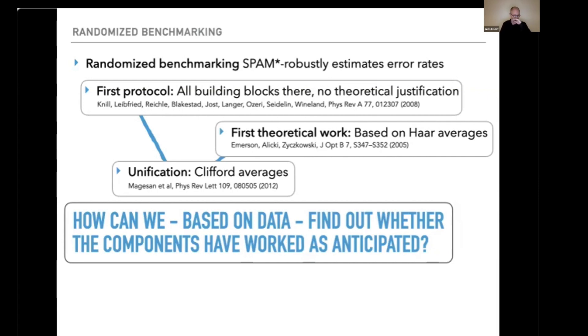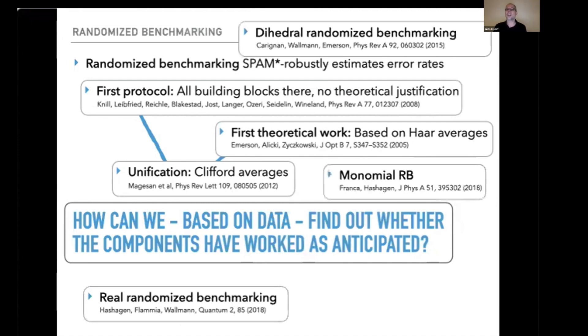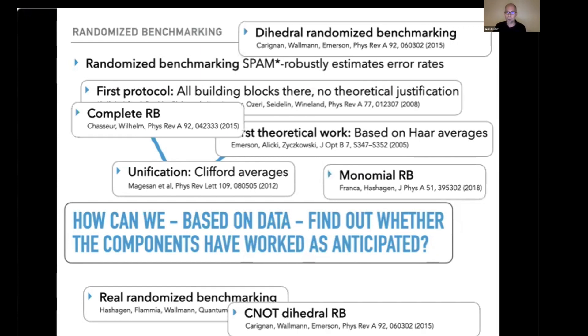That's the plain vanilla scheme, the Volkswagen of randomized benchmarking schemes, but there are lots of variants. For a while it was fashionable to introduce new schemes and variants to accommodate some practical or experimental needs. There's Pauli randomized benchmarking, dihedral randomized benchmarking, monomial randomized benchmarking, C0 dihedral randomized benchmarking, complete randomized benchmarking, cross-entropy benchmarking, and many others. We are aware of no fewer than 35 schemes that can be seen as a bouquet of variants.